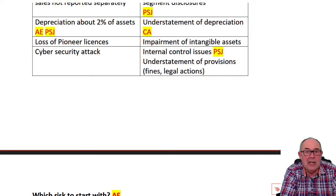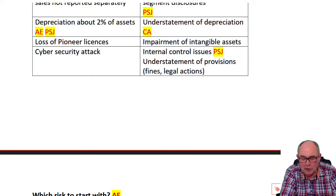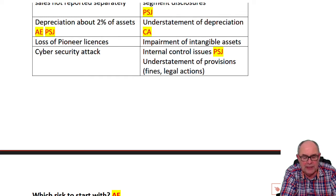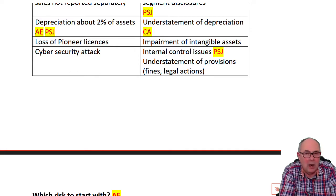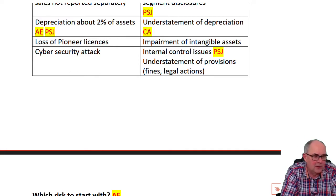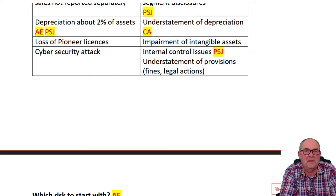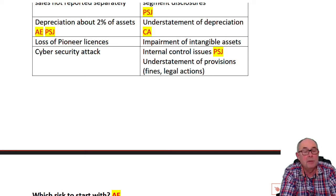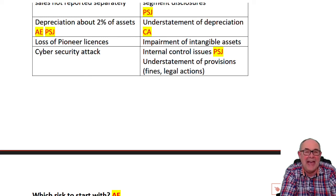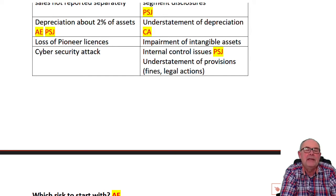If you're given depreciation and asset figures, quickly check whether the rate looks right. Compare accumulated depreciation for the two years and divide the difference into the carrying amount or cost of the assets — it suggests around 2%. Commercial acumen says this sounds wrong for ships, and challenging it demonstrates professional scepticism and judgment. Plus, you've done a calculation, so that's analysis and evaluation as well.